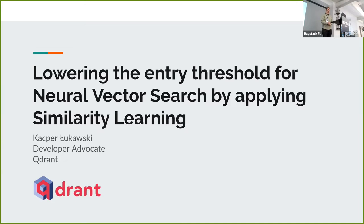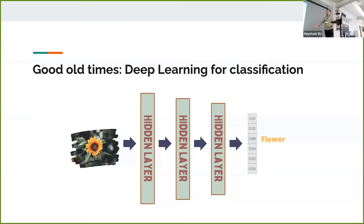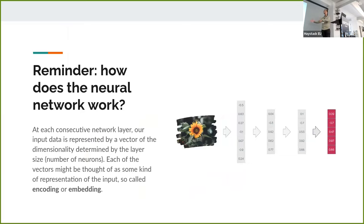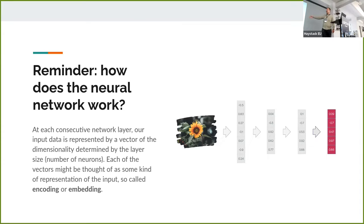A little reminder about neural networks. This is the basic structure of a neural network when we do classifications — I think that should be quite well known for everybody. This is how we structure the data sets for classification purposes: we have a set of examples with labels associated with each example, treated as input and target output. Under the hood, the input is converted into mathematical vectors of fixed dimensionality, derived from the number of neurons at each layer. Those vectors are called embeddings — they capture the regularities in our data.